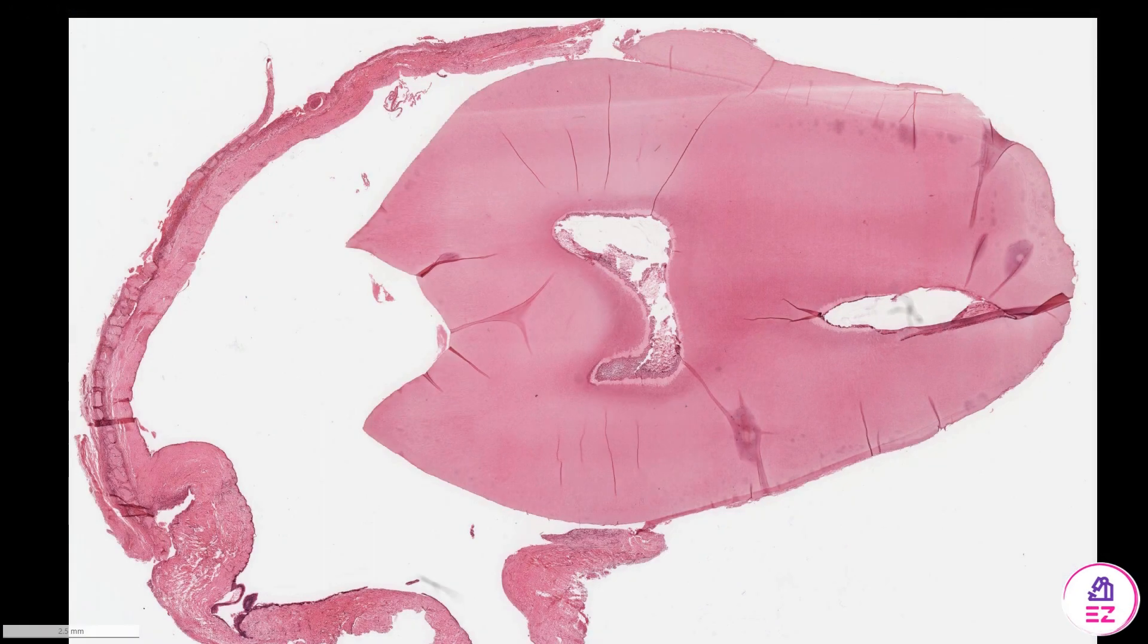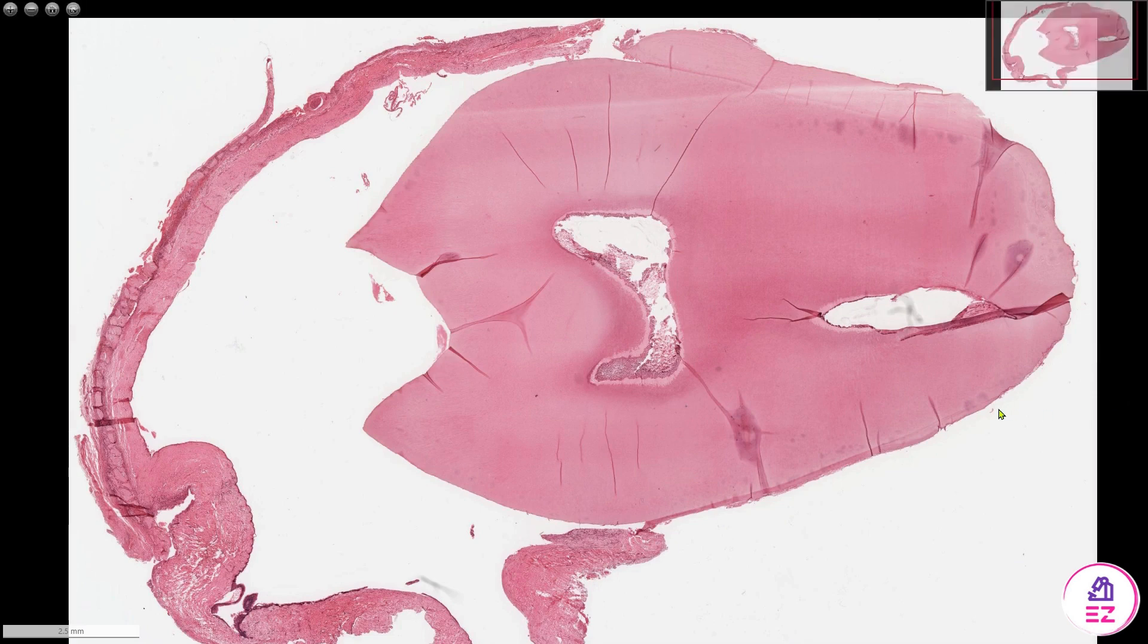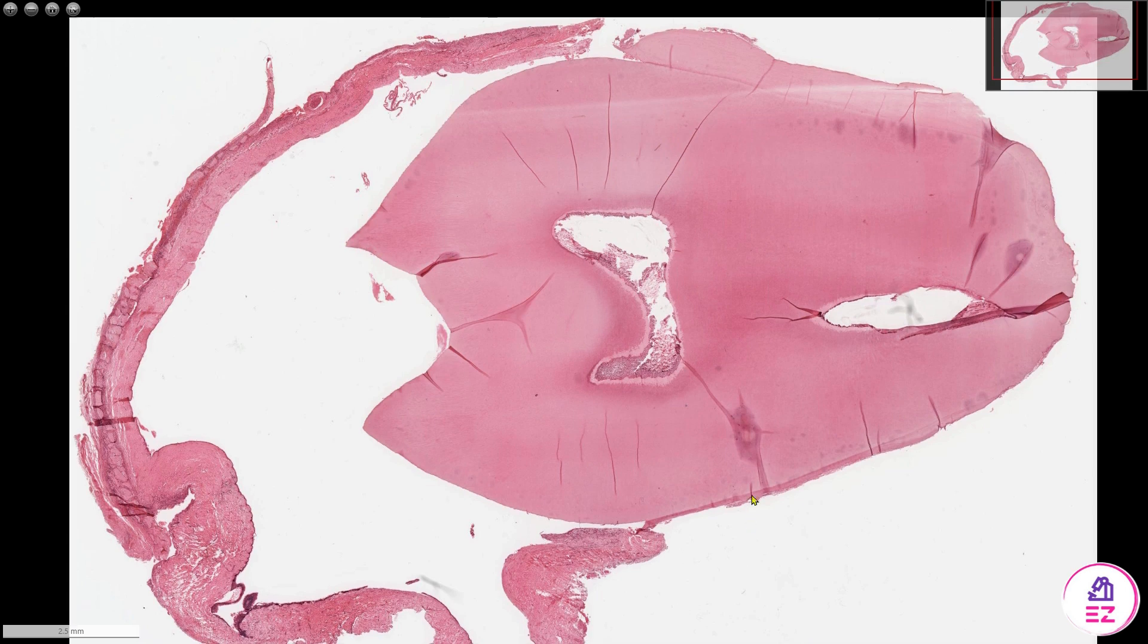Hello and welcome to Path Made Easy. Today's example is a dentigerous cyst. Now quite helpfully, this dentigerous cyst has been removed intact with the associated tooth. Often we're not as lucky as that, but that's what makes this such a nice teaching case.